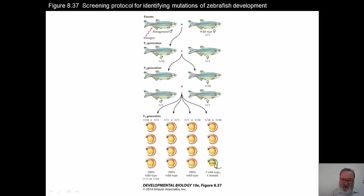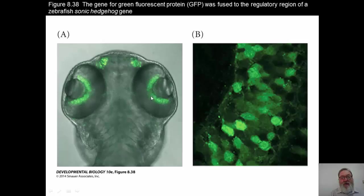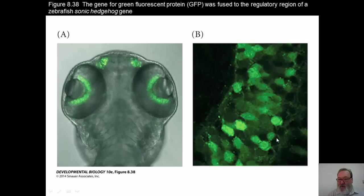Another major advantage that has come into use in developmental biology is fluorescent proteins that can be fused to a regulatory region of a gene. In this case, green fluorescent protein — and there are also red fluorescent proteins, so you could use two different colors in the same embryo — fused to a regulatory region of a zebrafish sonic hedgehog gene. The hedgehog gene promotes the development of certain kinds of embryonic cells into nerve cells. These are retinal cells labeled with green fluorescent protein, and these are the nares — nasal sensory cells. At higher magnification, you can see that certain individual cells are labeled, expressing sonic hedgehog, while others are not.